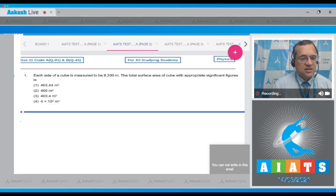The first question says that each side of a cube is measured to be 8.200 meters. Total surface area of the cube with appropriate significant figures is - these are the four options given.